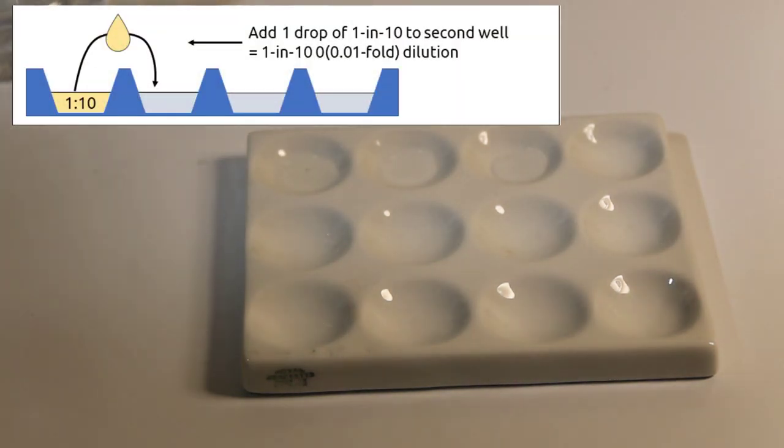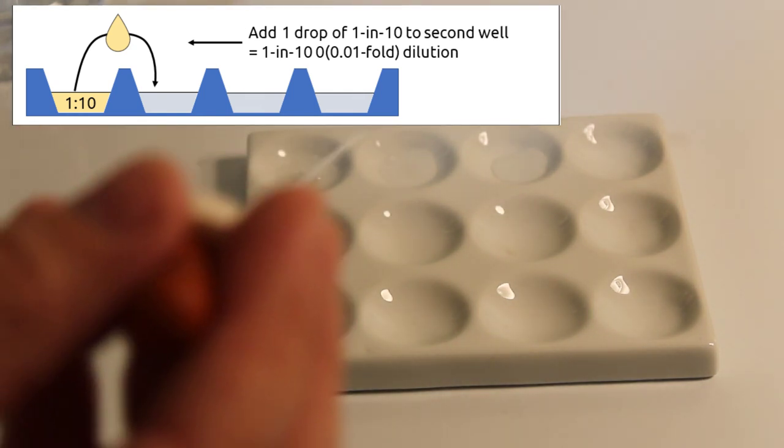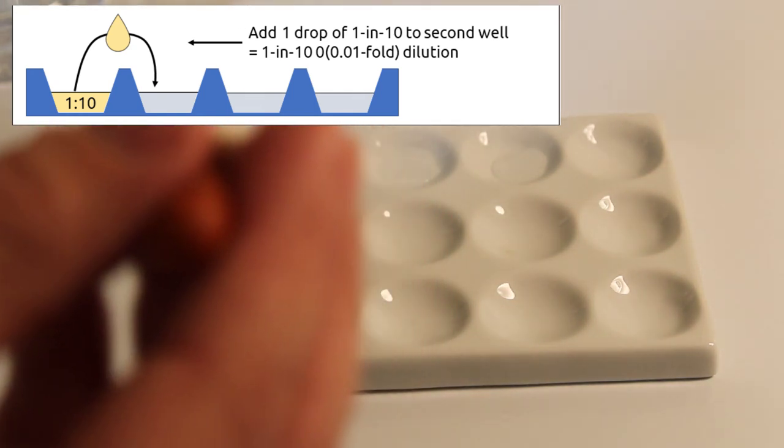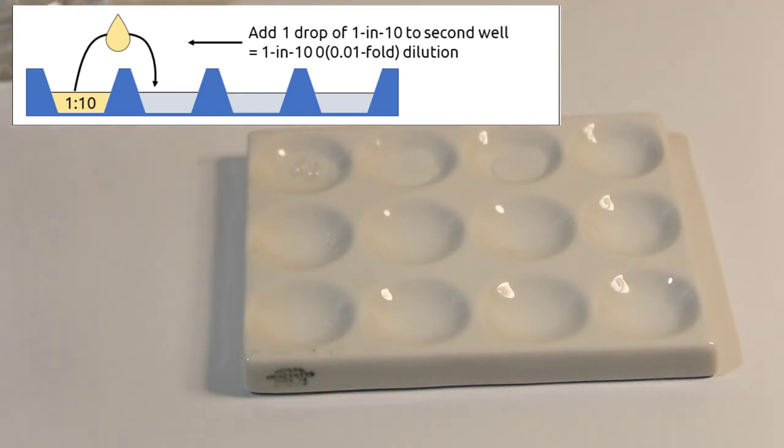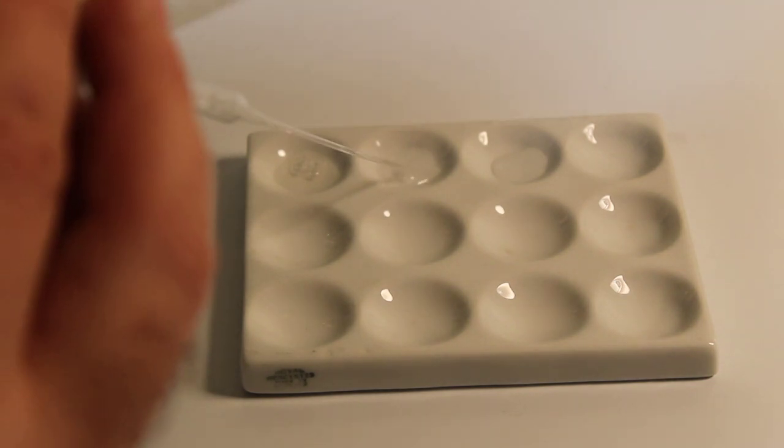But what if that's still not enough? Well now we can take one drop of that one in ten dilution and add it to our next well. Again, rinse our pipette, and we can then mix that well. And we now have a one in one hundred dilution of our original yeast solution.